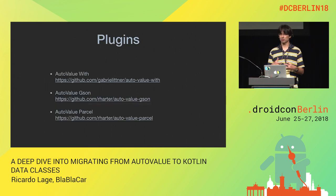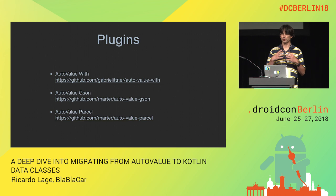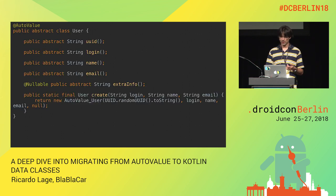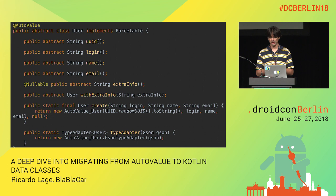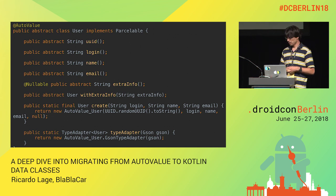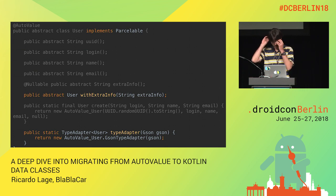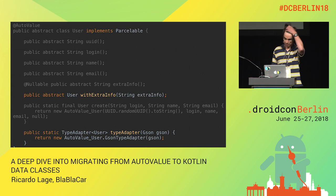AutoValue has a powerful plugin system. In our project we use three: AutoValue With for transformations, AutoValue JSON for serialization, and AutoValue Parcel for Parcelable implementation. With these plugins, all you have to do is add the relevant header — implementing Parcelable, annotating fields with the 'with' method, and adding a static type adapter function for serialization.